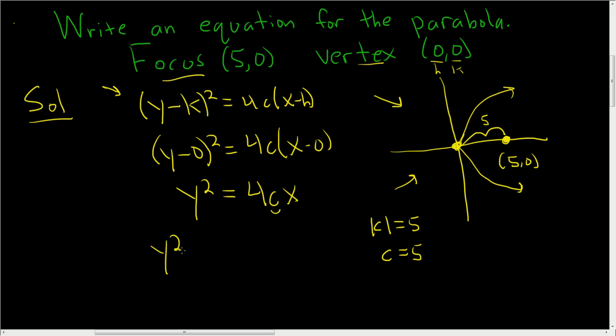Let's plug in the c. y² = 4 times 5 times x. So y² = 20x. That is the equation of the parabola with the given focus and the given vertex.